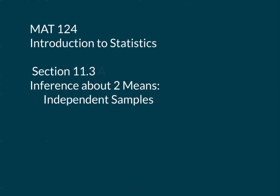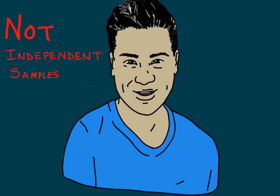Welcome back to Introduction to Statistics. Today we're going to be talking about inference about two means, independent samples, and also about what that means. The best way to explain what an independent sample is, is to give you an example of a sample that would not be independent.